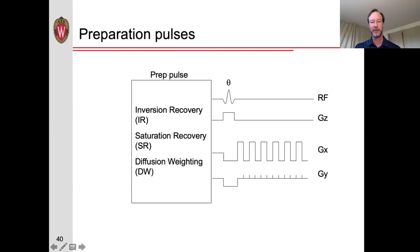So these preparation pulses can also be used to give us additional contrast in our imaging. For example, we can do inversion recovery, or saturation recovery, or diffusion weighting. What these pulses are, are basically additional RF pulses that are played before you actually begin your data acquisition. In this case, as illustrated here, an echo-planar imaging acquisition.